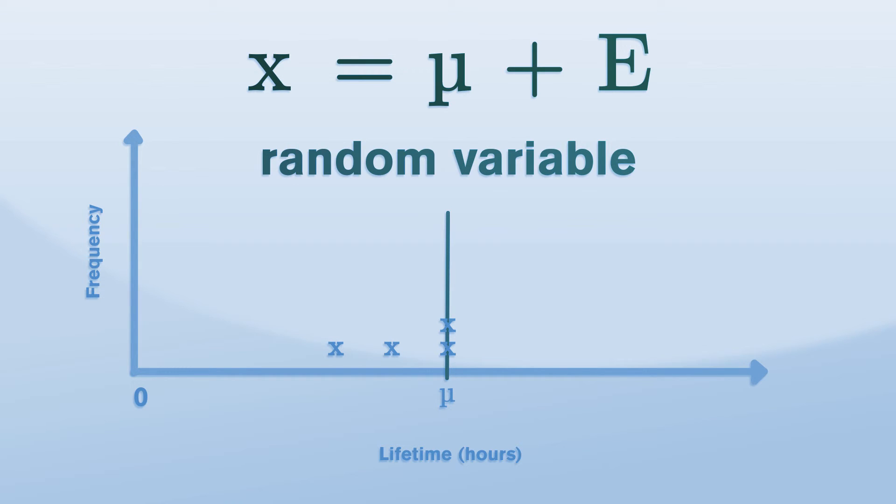As we consider more and more batteries, we build up a picture of how the variable is distributed. We can now see how there is variability in x. We often need to describe, quantify and ultimately reduce variability.